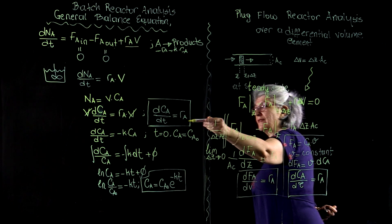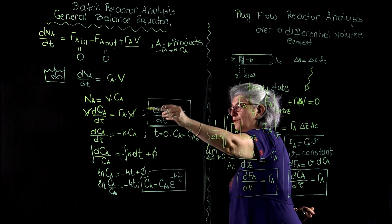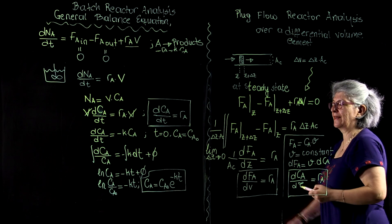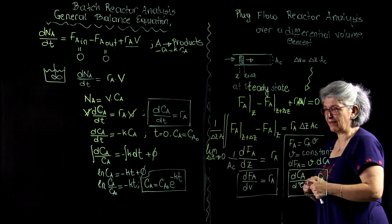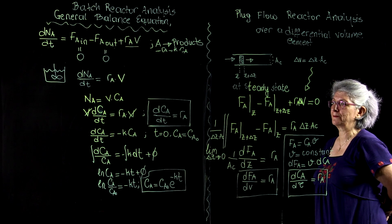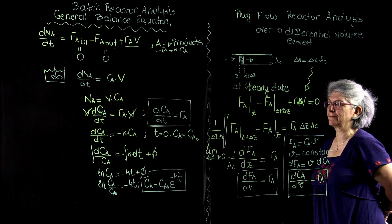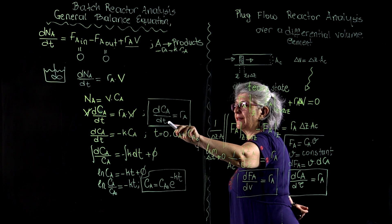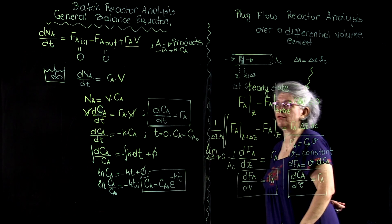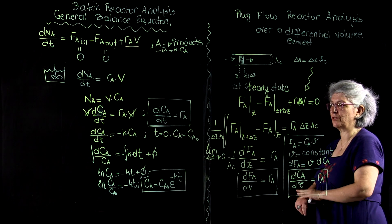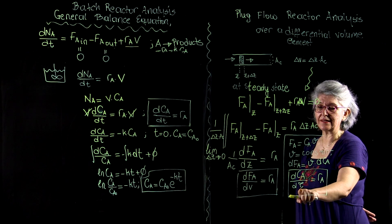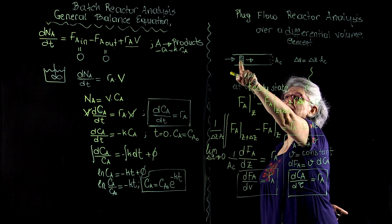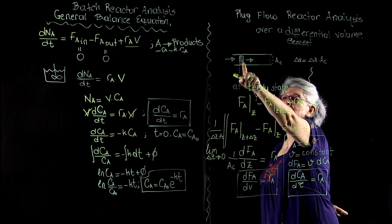This was the design equation for a batch reactor for constant volume. The mathematical similarity should be kept in mind. Here, the parameter time is the astronomical time, the time that you observe with your clock, with your watch. This is the space time, the time it takes this fluid element to traverse from here to here.